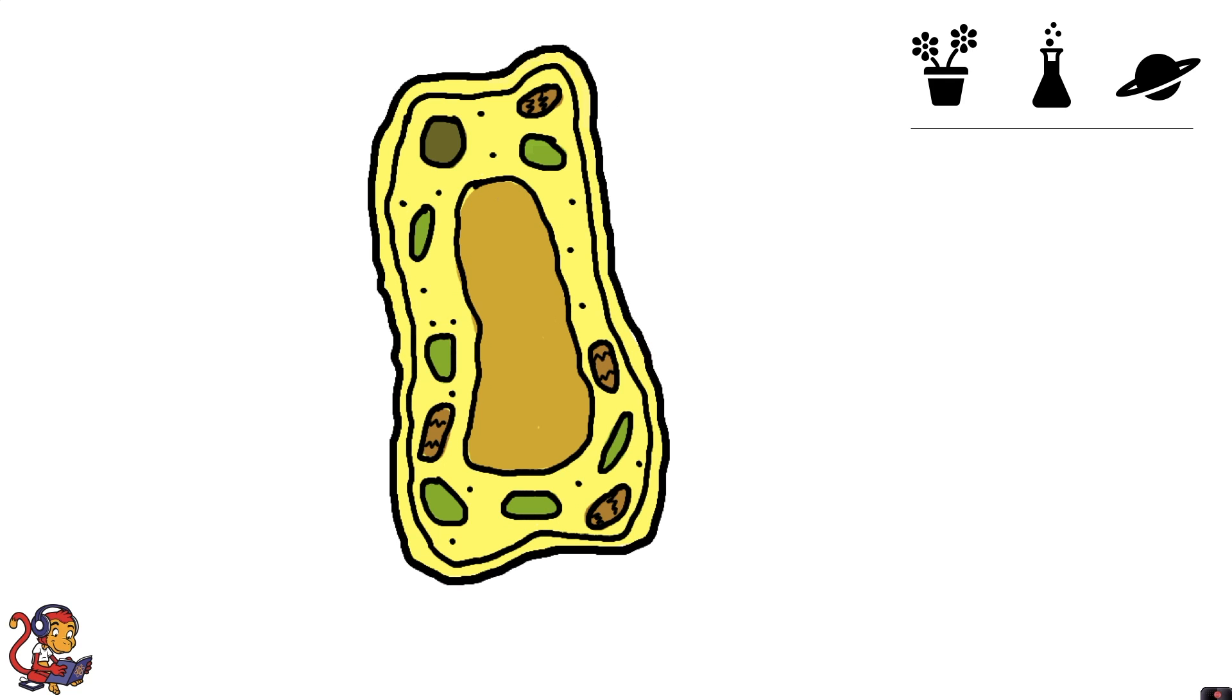This is a typical model of a plant cell. It has five things in common with the animal cell. It too has a nucleus to control cell activity.